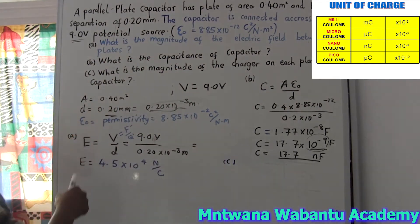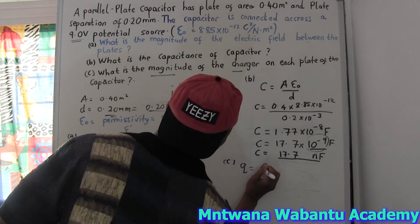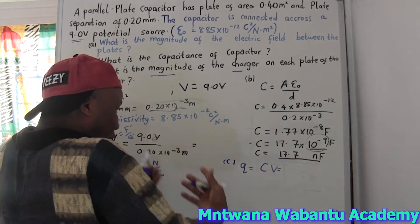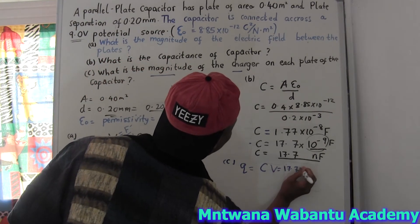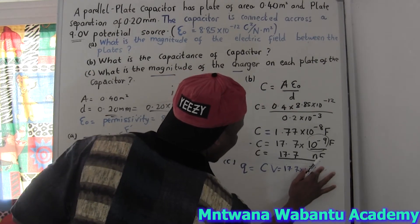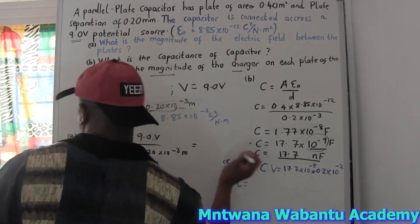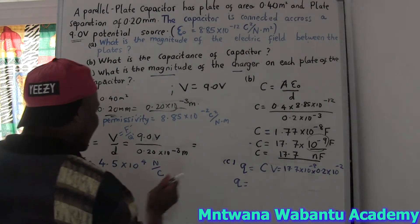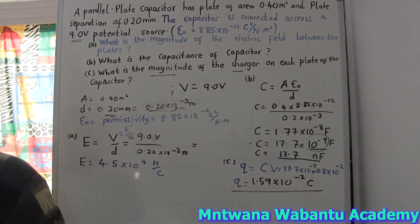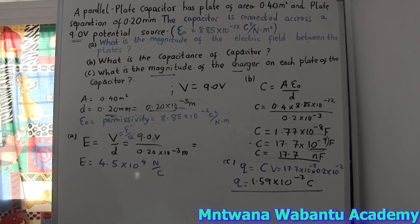Now for part C: what is the magnitude of the charge on each plate? Magnitude of charge means Q — quantity of charge. Q equals C times V — capacitance times potential difference. Taking the capacitance as 17.7 times 10 to the power negative 8 farads, and computing, we get 1.59 times 10 to the power negative 7 coulombs. So the magnitude of charge on each plate is 1.59×10⁻⁷ coulombs.